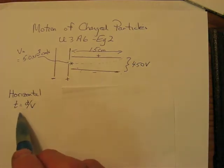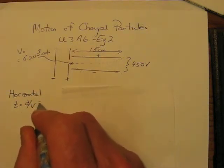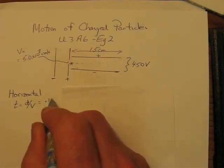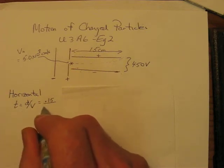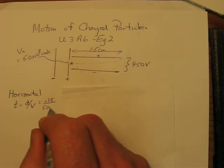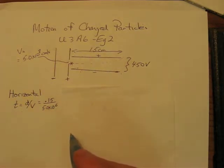Well, that time can be calculated by distance divided by velocity. The distance in this particular case would be 0.15 meters and the velocity would be 5.0 times 10 to the 6 meters per second. I've converted that to meters per second.